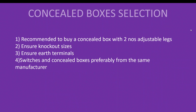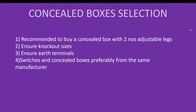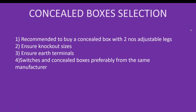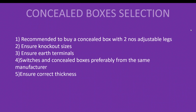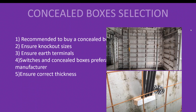The fourth point: switches and concealed boxes preferably shall be from the same manufacturer. Every manufacturer keeps some tolerance level and their own identity on their products. If you buy concealed boxes from one manufacturer and switches from another, the plates may not sit correctly — there will be misalignment or difficulty in installation. The fifth point is to ensure correct thickness. Normally metal boxes with 1mm, 1.2mm, or 1.6mm thickness are used. If you are using Miwan Formworks, 1.6mm thickness metal boxes are preferred.